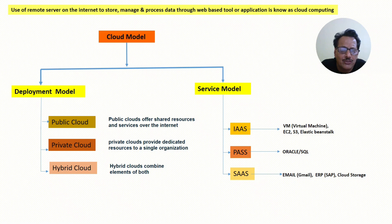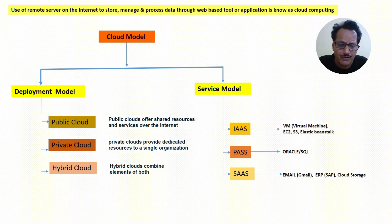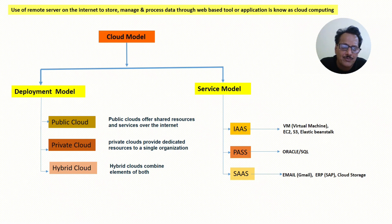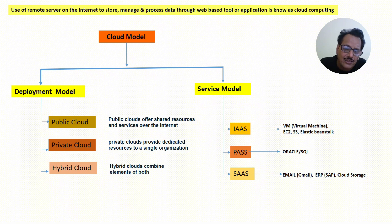Software as a Service: the email system you use is a part of SaaS. ERP packages and cloud storage like Google Drive are also part of Software as a Service. With Gmail, the mail management is being done by the provider — you just need to send and receive mail and the rest is handled by them.